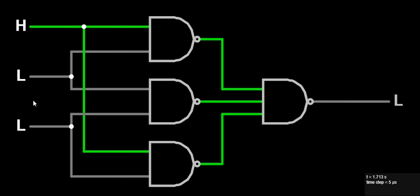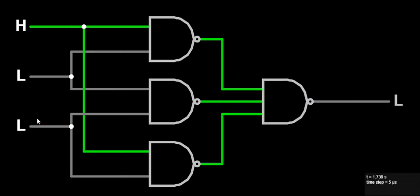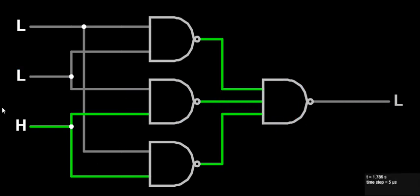Now you can see the output is low. The number of low logic inputs is more than high logic. Here low logic input is two and high logic input is one, so output will be low — the majority input will be dominant at the output. If I make any one input high, there will be no effect. But if I make another input high, then the number of high inputs will become more, and the output will change.